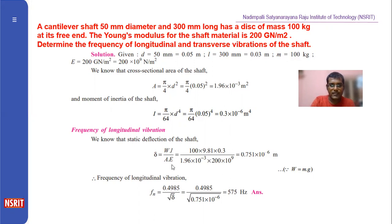And A is the area, pi d squared by 4, 1.96×10⁻³ m². And E is the Young's modulus. So then you get the deflection.